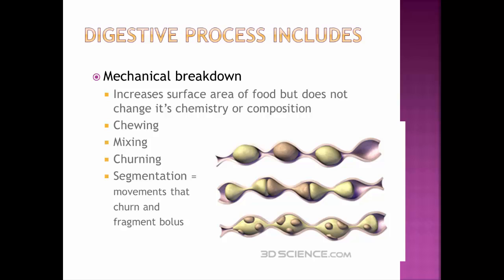Another part of the digestive process is mechanical breakdown. Mechanical breakdown only increases the surface area of food — taking big chunks and making them into smaller bits. This is not chemical digestion. Chemical digestion means breaking chemical bonds, taking polysaccharides and breaking them down into glucose, or proteins into amino acids. Mechanical digestion just takes big pieces and makes them smaller, so polysaccharides are still polysaccharides. Examples include chewing, mixing, churning, and segmentation. In segmentation, the movement of food is not to propel it along like in peristalsis, but to churn and mix it into smaller bits.